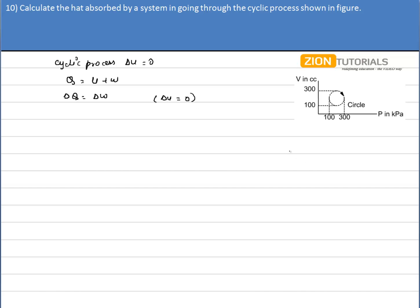Secondly, if in a PV curve the graph is clockwise, then the work done is positive. Or if the work has to be calculated in anticlockwise direction, then the work done is negative. Here we have the circular path with clockwise motion, so the work done will be positive.